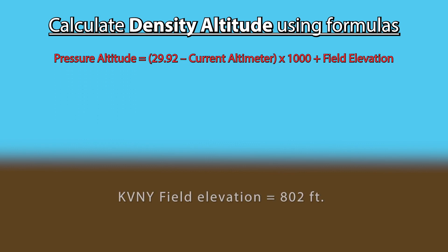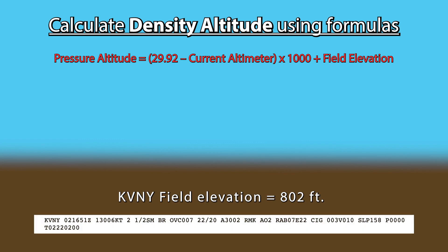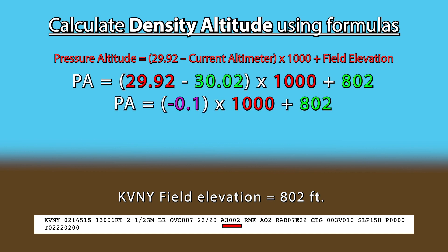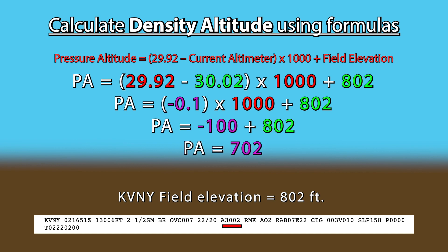For example, my field elevation is 802 feet and the current barometric pressure is 30.02. So, 29.92 minus 30.02 equals negative 0.1, times 1000 equals negative 100, plus 802 equals 702. The current pressure altitude at my airport is 702 feet.